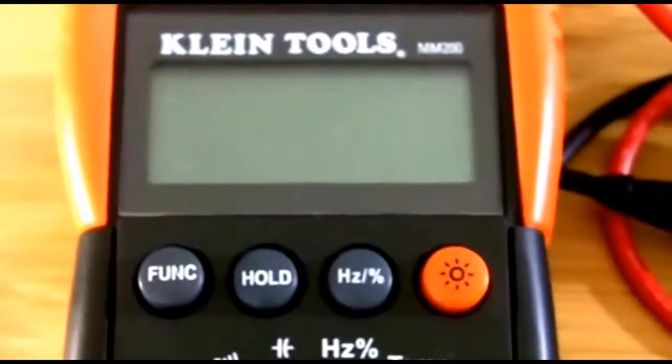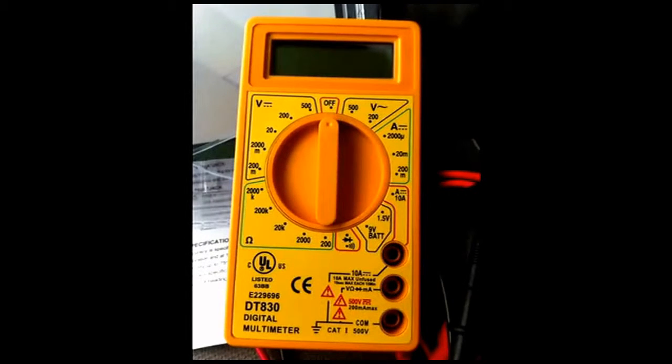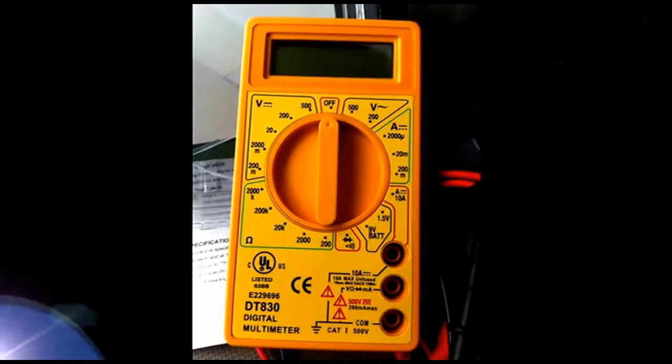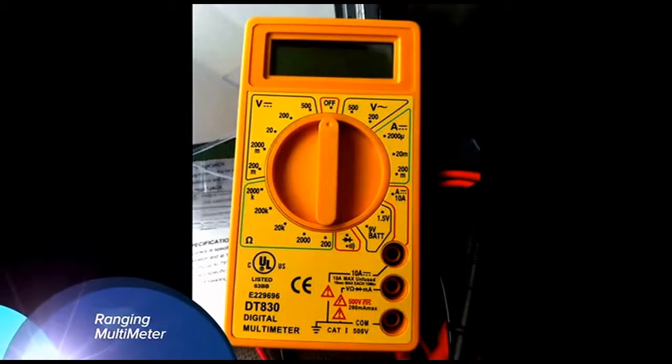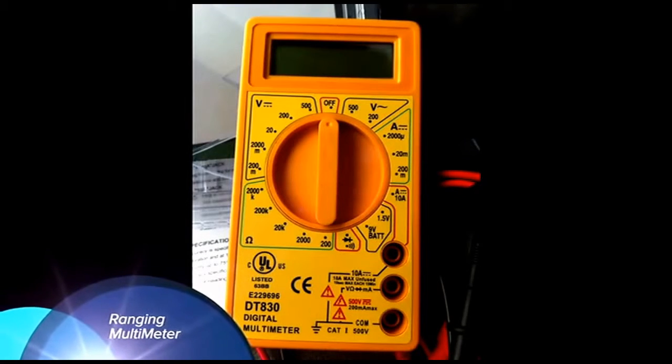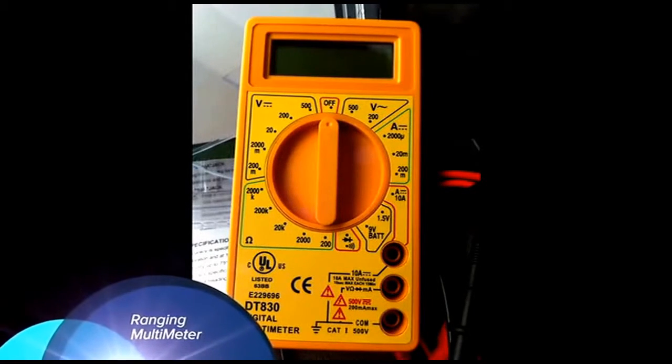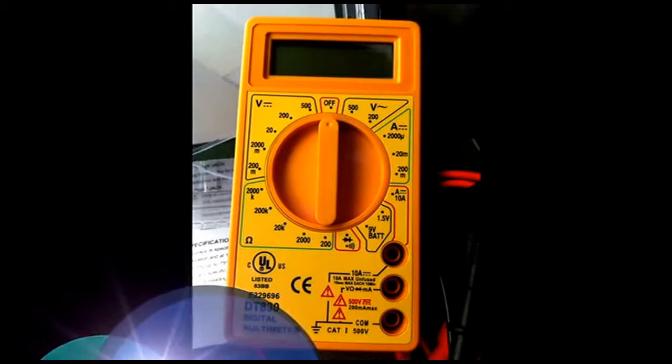Now, what I was just showing you is an auto-ranging multimeter, which figures out which level of voltage or item that you're trying to measure.